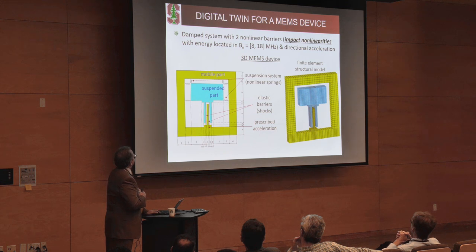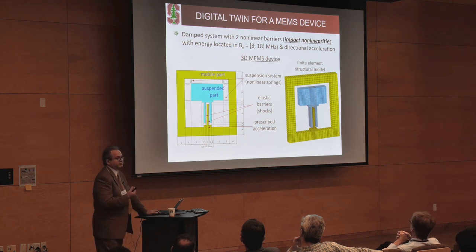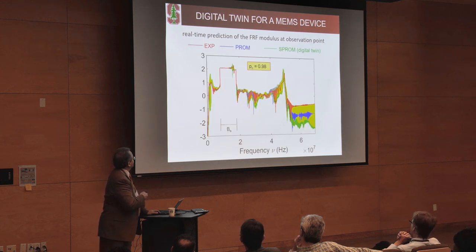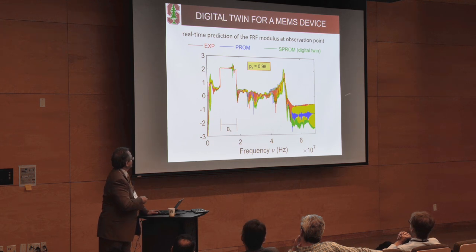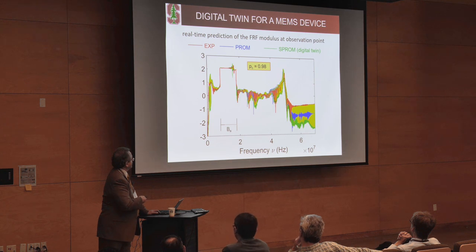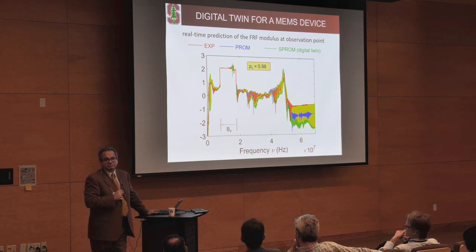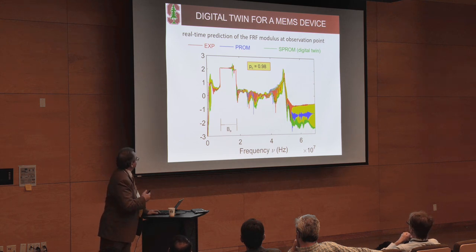A final example: a MEMS device for which we also have data. You do the model, you have the experimental data, the deterministic reduced model, and the stochastic one. In all cases, the stochastic model — with upper and lower bounds in green bracketing a yellow-highlighted region — is always bracketing the experimental data. Once you've achieved this result for a large-dimensional parameter space, you have your digital twin modeled, and you can use it for predictive maintenance.